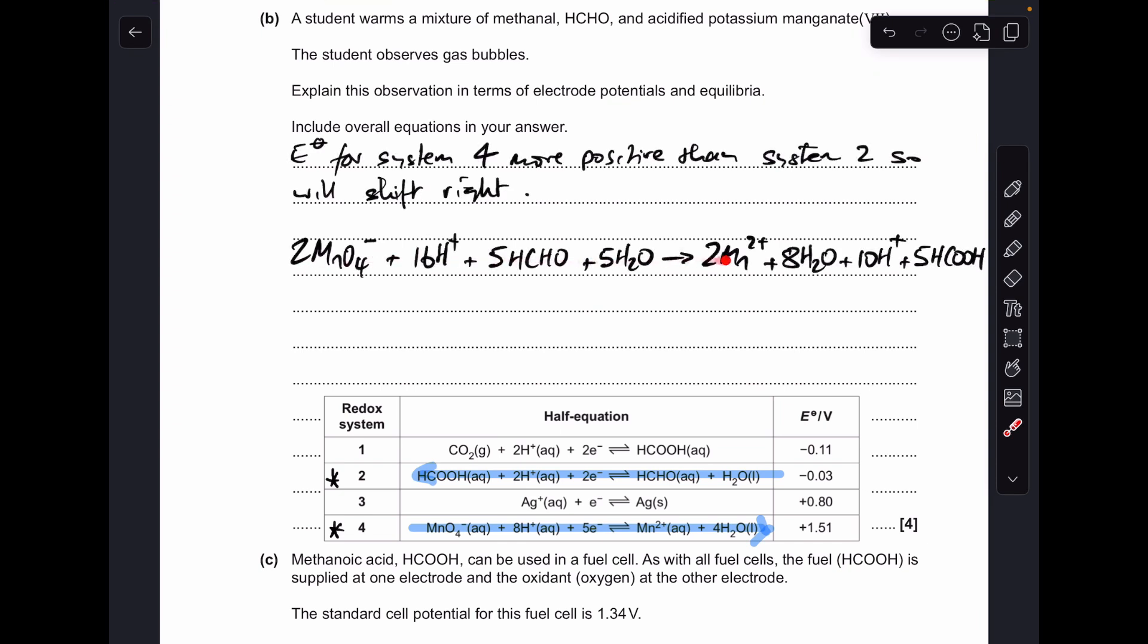So there's those two half equations added together, but we need to tidy this up because we've got H-plus ions on each side, and we've got H2O on each side as well. H-plus ions first, so those 10 H-plus ions will cancel on the right, and they will leave 6 on the left. The H2O, we've got 5 on the left and 8 on the right, so that'll cancel down to 3.